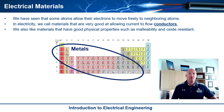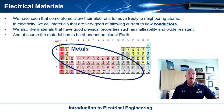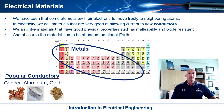You can't have something that's very rare and very expensive to mine and then try to build something that requires a lot of that material. So it has to be abundant. In electricity and electrical engineering, the most popular conductors that we tend to use are copper, aluminum, and gold.